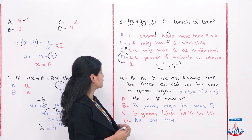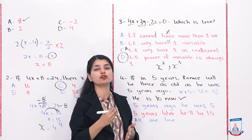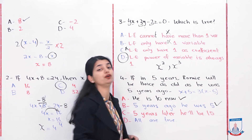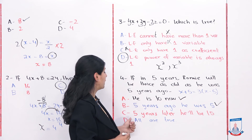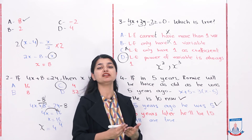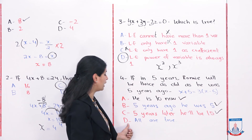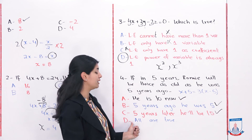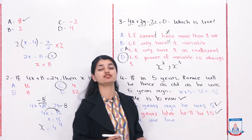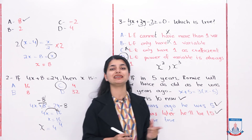Option B says 5 years ago he was 5. If he is 10 now, then 5 years ago he was indeed 5, so Option B is also correct. Option C says 5 years later he will be 15. If he is 10 now, adding 5 gives 15 — Option C is correct too. So all of our statements are 100% correct, meaning the answer is 'all are true.' Once you solve the equation, you will easily get your answer.